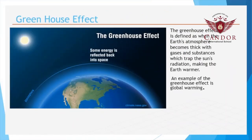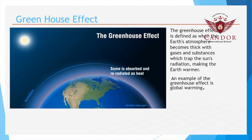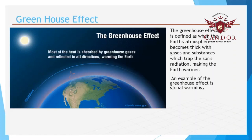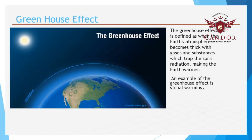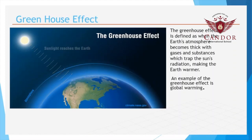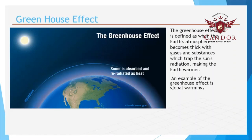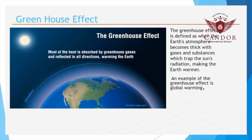The greenhouse effect is basically the process where the sun's heat reaches the earth. However, some of the heat gets reflected back into space, whereas some of the heat stays in the earth's atmosphere and warms the earth. There are many greenhouse gases: carbon dioxide, methane and nitrous oxide.